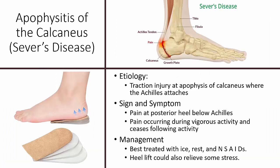Apophysitis of the calcaneus, also known as Sever's disease. The etiology is a traction injury at the apophysis of the calcaneus where the Achilles tendon attaches. The attachment site is pulling off the calcaneal bone, and the bone tries to maintain the attachment site by laying down additional calcium, resulting in a calcium formation on the back of the calcaneus.